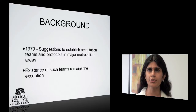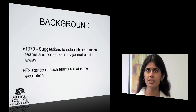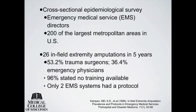The idea of creating a protocol for field amputation is not a new one. In 1979, suggestions were made to establish amputation teams and protocols in major metropolitan areas, but still today the existence of such teams remains the exception. There is limited evidence-based data in the literature on this subject. A cross-sectional epidemiological survey of EMS directors from 200 of the largest metropolitan areas in the U.S. showed that in a five-year period, 26 in-field extremity amputations were performed. 53% were done by trauma surgeons and 36% by emergency medicine physicians. The overwhelming majority, 96%, stated no training was available to them, and only two EMS systems had a protocol in place. This study emphasizes the need for an established protocol, especially for such a high-risk yet uncommon event.